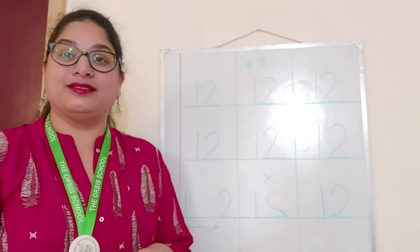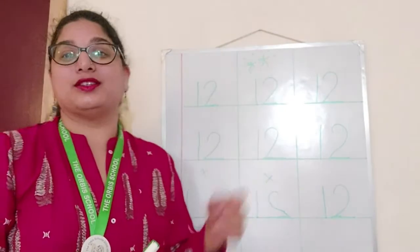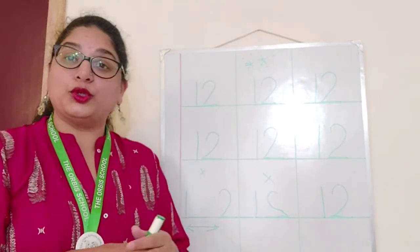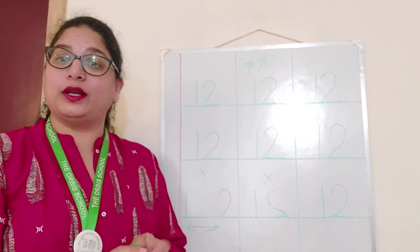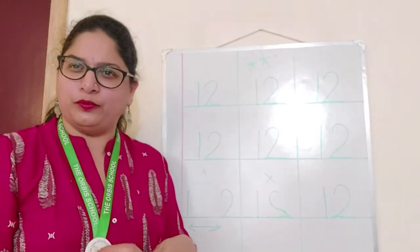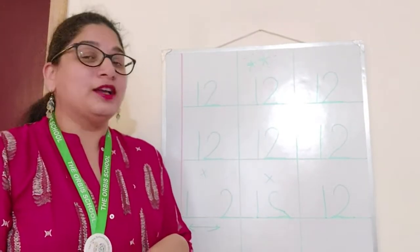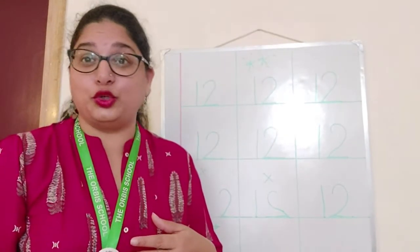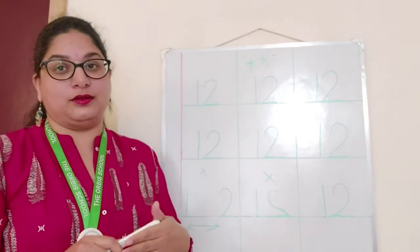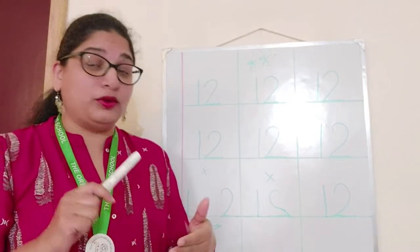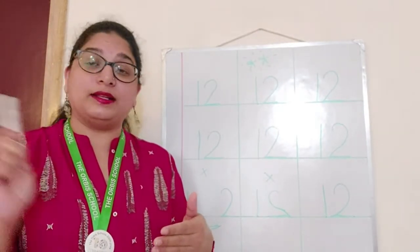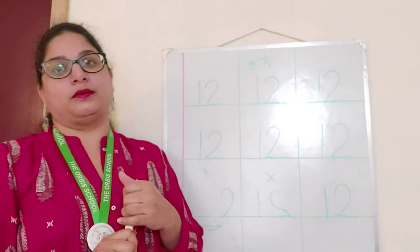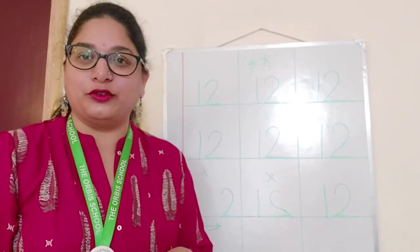And children, there is one thing. I have not used eraser over here. Did I erase? This is a white board so I have a white board duster. Did I erase? No I didn't erase. So even you are not going to use your eraser. What you do is you keep your eraser somewhere else and you only take pencil and your book and do your work. Don't use eraser children.